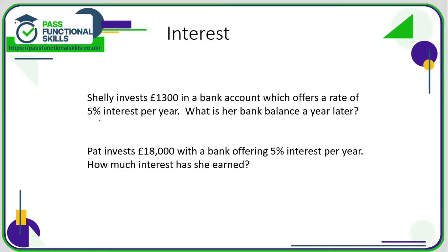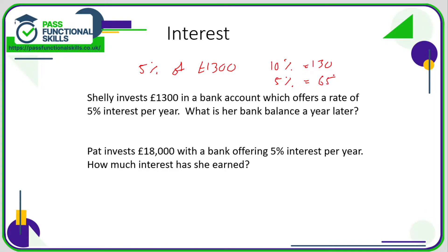What we need to do is work out what five percent of thirteen hundred is. Well, ten percent is 130, so five percent is half of that, and 130 divided by two is 65. So her bank balance will have increased by 65 pounds. At the end of the year her bank balance will be one thousand three hundred and sixty-five — that's her initial investment plus the interest the bank has given her.